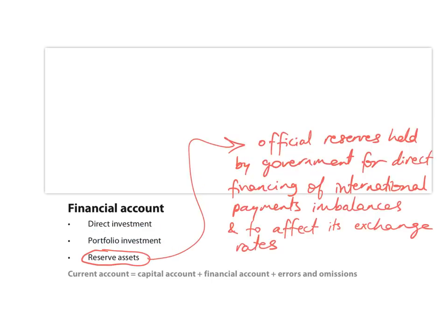The final sub-account of the financial account is reserve assets. This refers to the government's official reserves that are held for direct financing of international payments and any imbalances in those payments. Governments also keep official reserves to affect their exchange rates by buying and selling currency to influence the value of their own exchange rate.